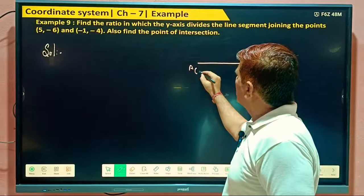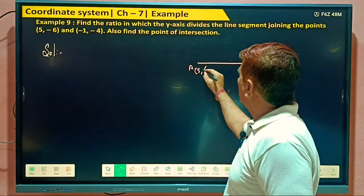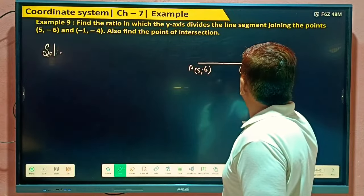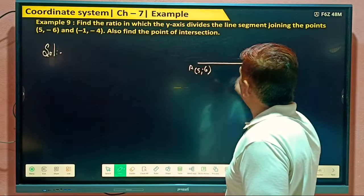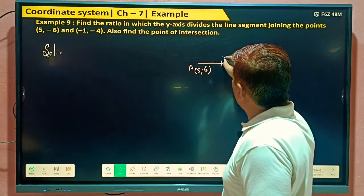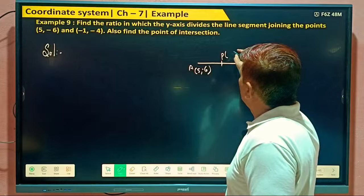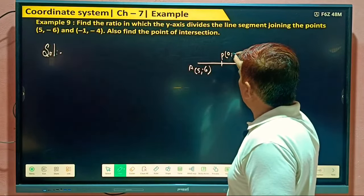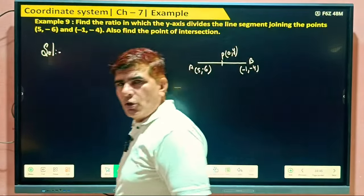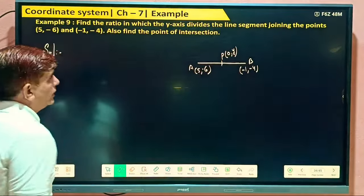A we have taken this 5 and this is minus 6. And this we have taken minus 1, minus 4 we have taken B. And this is like the y-axis, we can say this is a point P whose coordinates are, x must 0 and this we can take y. Got this? This is the main point here.